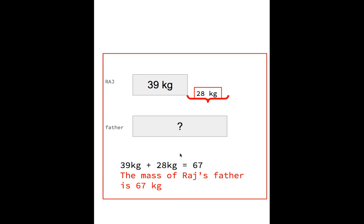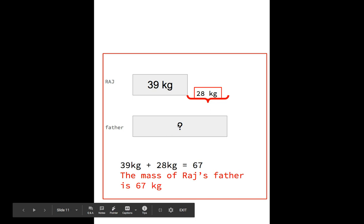Okay so now you have unpaused the video. We know that Raj's mass is 39 kilograms. Raj's father we don't know what his mass is but we know his mass is 28 kilograms larger so that's why we have a larger bar for Raj's father. When you're doing this because we have a bigger bar than Raj we know we need a bigger number so we're going to add 39 kilograms plus 28 kilograms equals 67 so the mass of Raj's father is 67 kilograms.